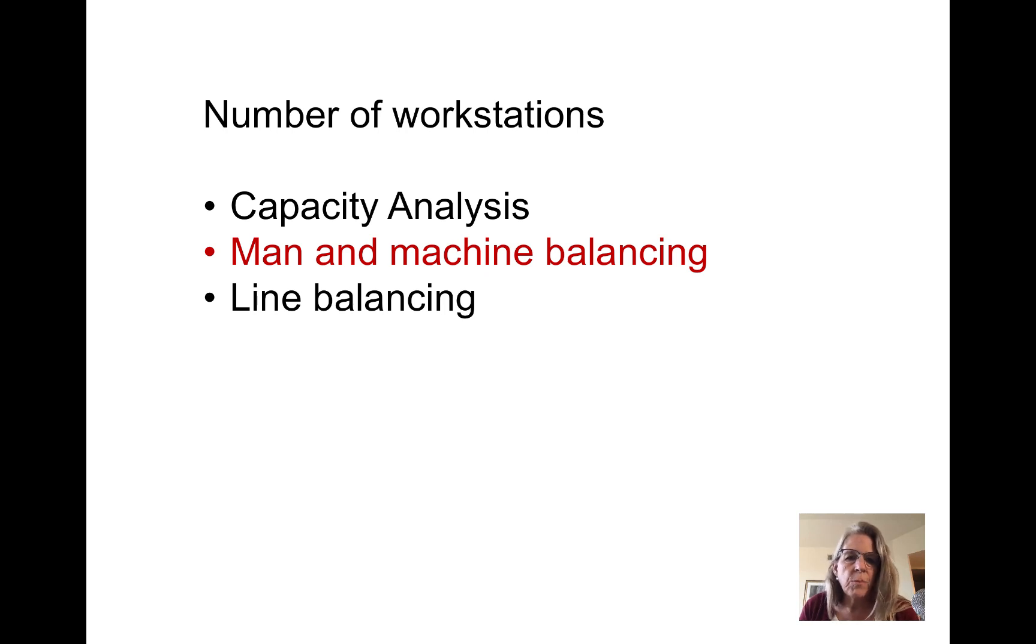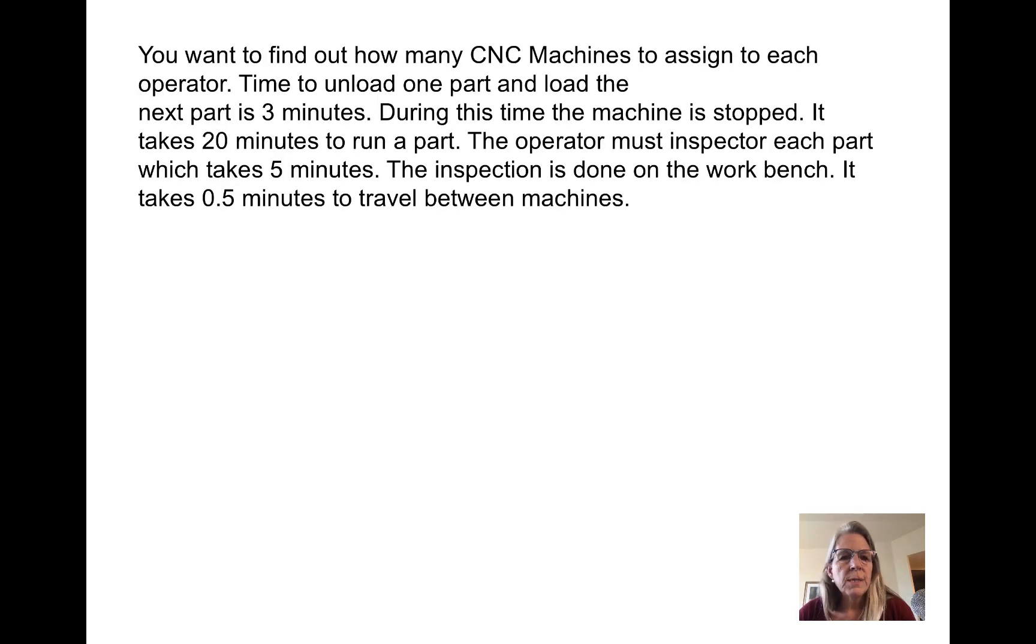In the next example, we're going to look at man-machine balancing. You want to find out how many CNC machines to assign to each operator. The time to unload one part and load the next part is three minutes. During this time, the machine is stopped. It takes 20 minutes to run a part and the operator must inspect each part, which takes five minutes. The inspection is done on the workbench. It takes half a minute to travel between machines.